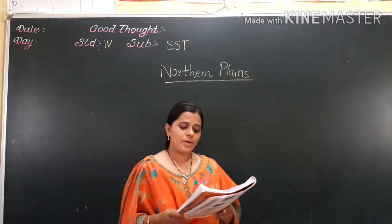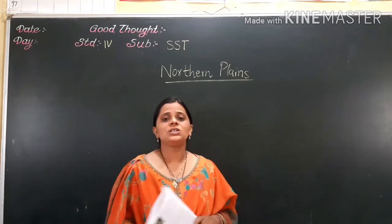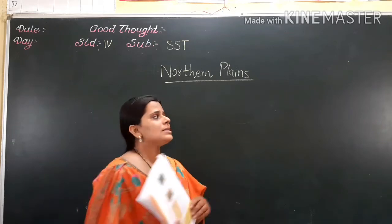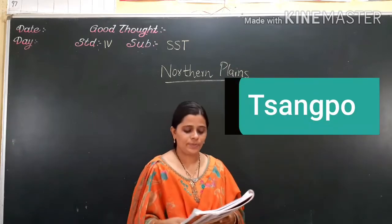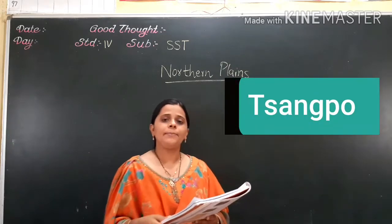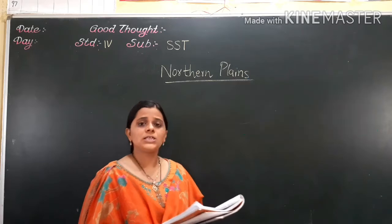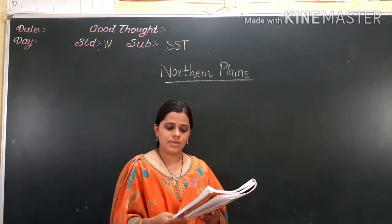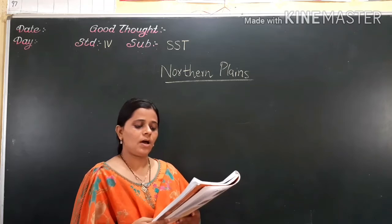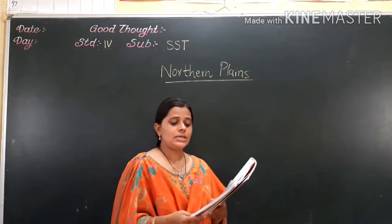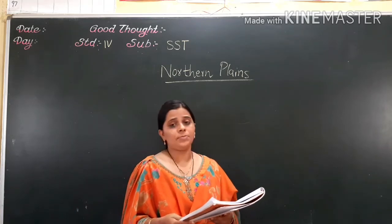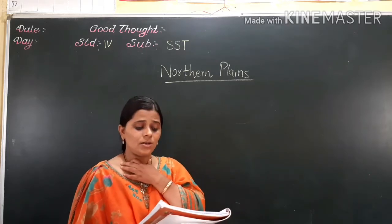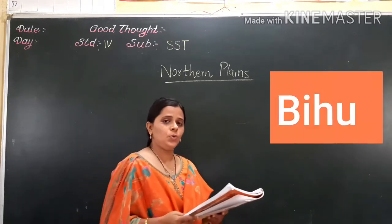Next: the river Brahmaputra is known as dash in Tibet. So what is it known as in Tibet? Tsangpo. Good, so write Tsangpo. Next: Bihu and Christmas are important festivals celebrated by people in the Brahmaputra region. So which festival is that? Bihu. Right, Bihu.